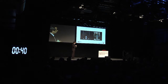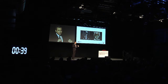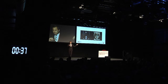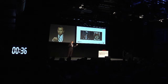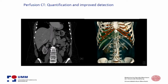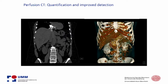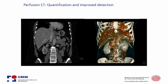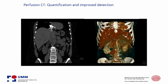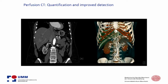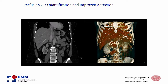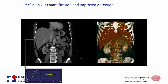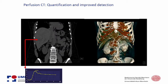4D radiomics means we have left the area of static imaging. This is an example of 4D computer tomography where you can see a liver metastasis, and we now have information over the whole time course — that multiplies our information by a factor of 100.